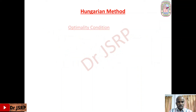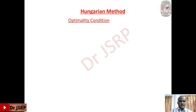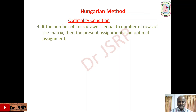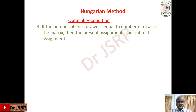If all zeros are covered by lines, go to the next step. Otherwise, go for the columns: if there is only one zero in the first column, mark a circle around that zero and draw a horizontal line through it. If there are more than one zero in the column, skip it and move to the next column. Repeat for all columns. After that, if all zeros are covered by lines, go to the next step; otherwise repeat the row process until all zeros are covered. Then verify the optimality condition: if the number of lines drawn equals the number of rows of the matrix, the present assignment is optimal.